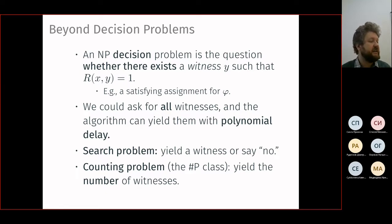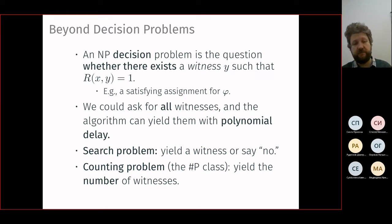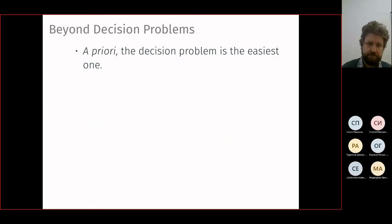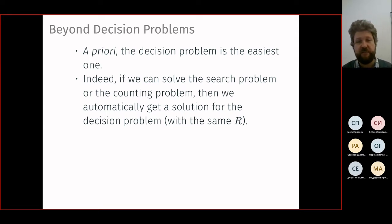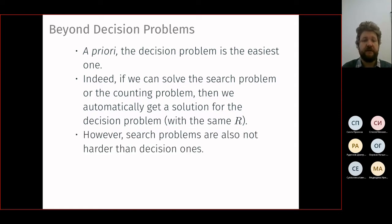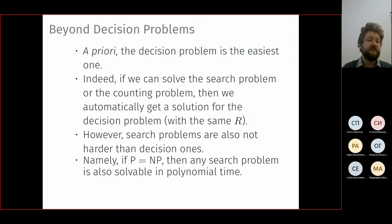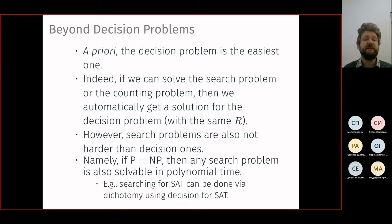Sharp-P is in a sense harder than NP, though it's a different type: NP answers yes/no (Boolean), while counting problems answer with a natural number. The decision problem is a priori the easiest variant. If P equals NP, any search problem is also solvable in polynomial time — demonstrated by dichotomy: for SAT, we can find one satisfying assignment by repeatedly querying the decision algorithm.